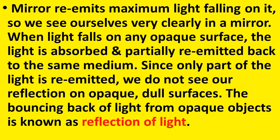We know that in front of a mirror we can see our face very clearly — because the mirror re-emits maximum light falling on it. When light falls on any opaque surface, the light is absorbed or partially re-emitted back to the same medium. Since only a part of the light is re-emitted, we do not see our reflection on opaque dull surfaces. This type of bouncing back of light from an opaque object is known as reflection of light.